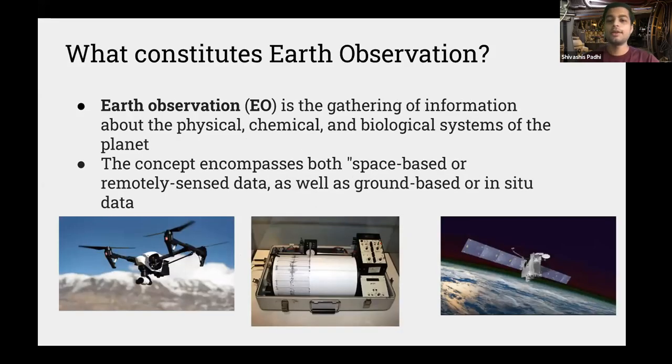So what constitutes Earth Observation? EO is the gathering of information about the attributes of planet Earth, and it encompasses both space-based remotely sensed data as well as ground-based observation. For example, we have a drone which captures data related to agriculture or mining fields. That is also Earth Observation. Then we have a seismograph which captures the disturbances in the Earth's crust. And thirdly, there is satellite imagery. This is what we'll be talking about in a more detailed manner. But all of these are examples of Earth Observation.